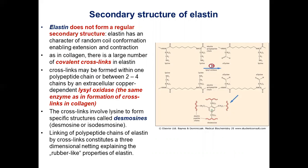Elastin does not form a regular secondary structure. As in collagen, there is a large number of covalent cross-links in elastin. Cross-links may be formed between one polypeptide chain or between two to four chains by intracellular copper-dependent lysyl oxidase, the same enzyme involved in cross-link formation in collagen. The cross-links involve lysine residues to form a special structure called desmosine.